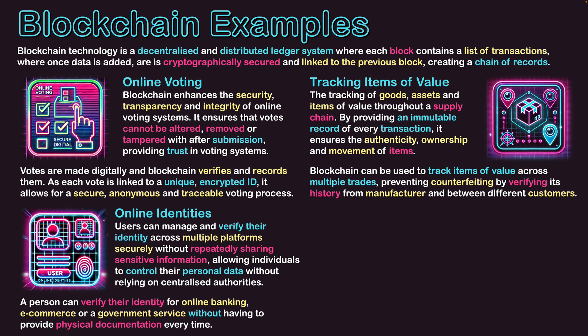Blockchain can be used to track items of value across multiple trades, preventing counterfeiting by verifying its history from the manufacturer — from when it was first made — and between different customers. As this potential digital product is sold, it can be traced back between previous customers right to when the manufacturer first released it. The manufacturer to the first customer would be one block in the chain, and every time a customer sold to another customer, that creates a new block, allowing us to track the product's history back to when it was first made.